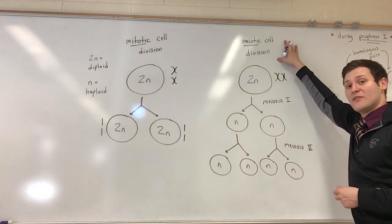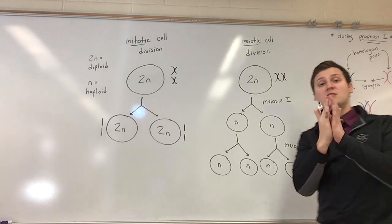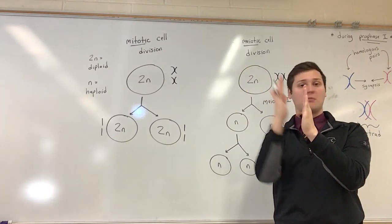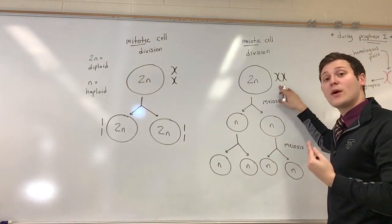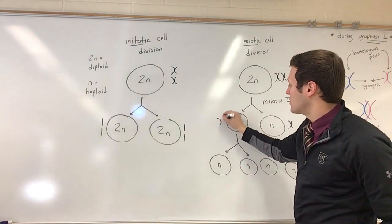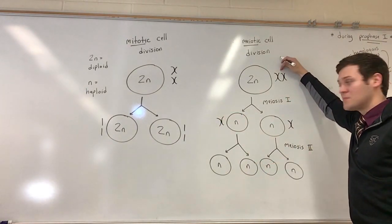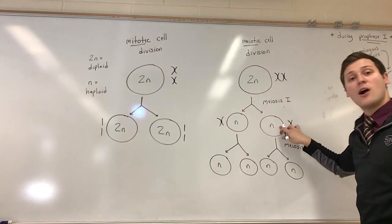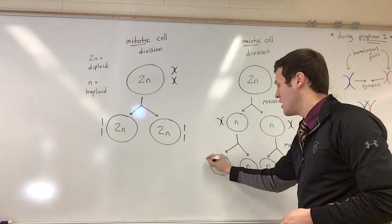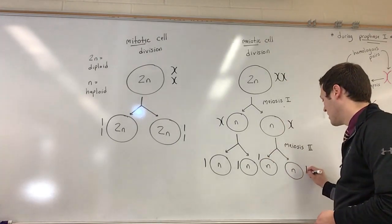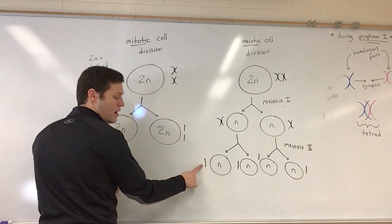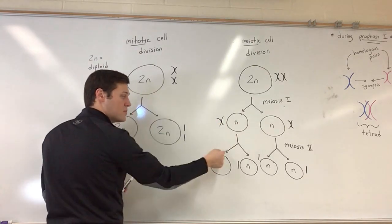For meiotic cell division we also start diploid with two chromosomes. The first division separates the homologous pairs — chromosomes with the same general genes, one from your dad and one from your mom. Humans have 23 homologous pairs. After separation, the chromosomes are still replicated with two chromatids, but now each cell has only one chromosome — so we are haploid. Then those replicated chromosomes split again into unreplicated chromosomes, and we end with four haploid cells.